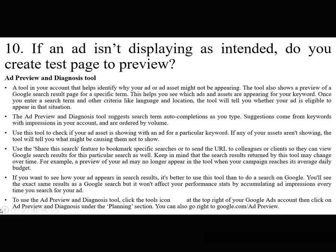If you want to see how your ad appears in search, it is better to use this tool than to do a search on Google. You will see the exact same results as a Google search, but it won't affect your performance stats by accumulating ad impressions. To use the ad preview and diagnosis tool, click the tools icon at the top right of your Google Ads account, then click on 'Ad Preview and Diagnosis' under the Planning section. You can also go directly to google.com/adpreview.